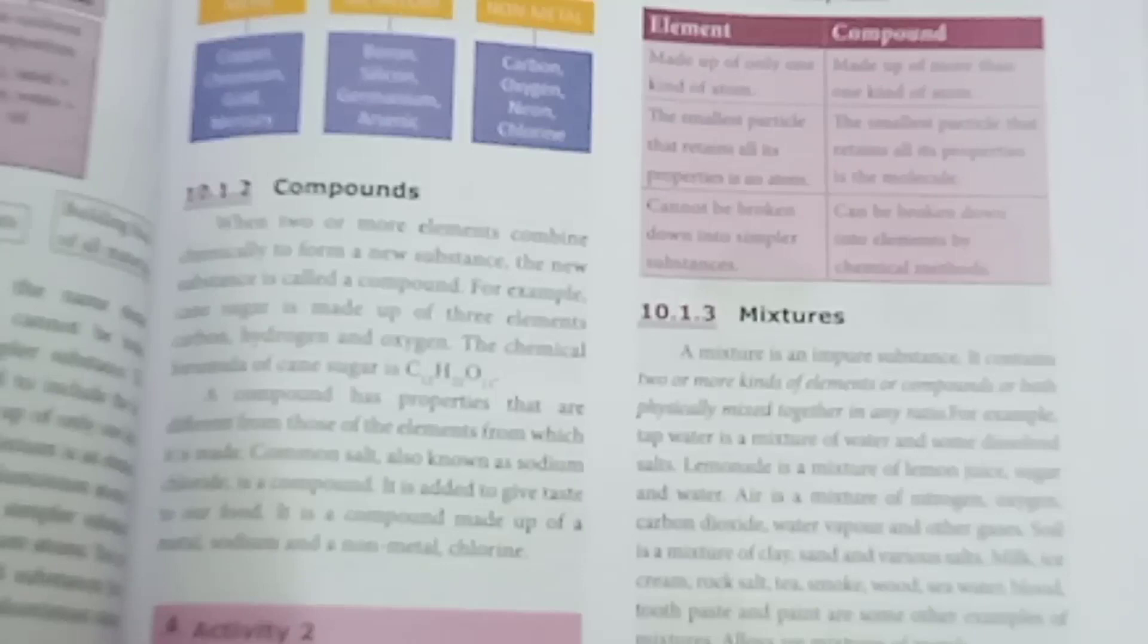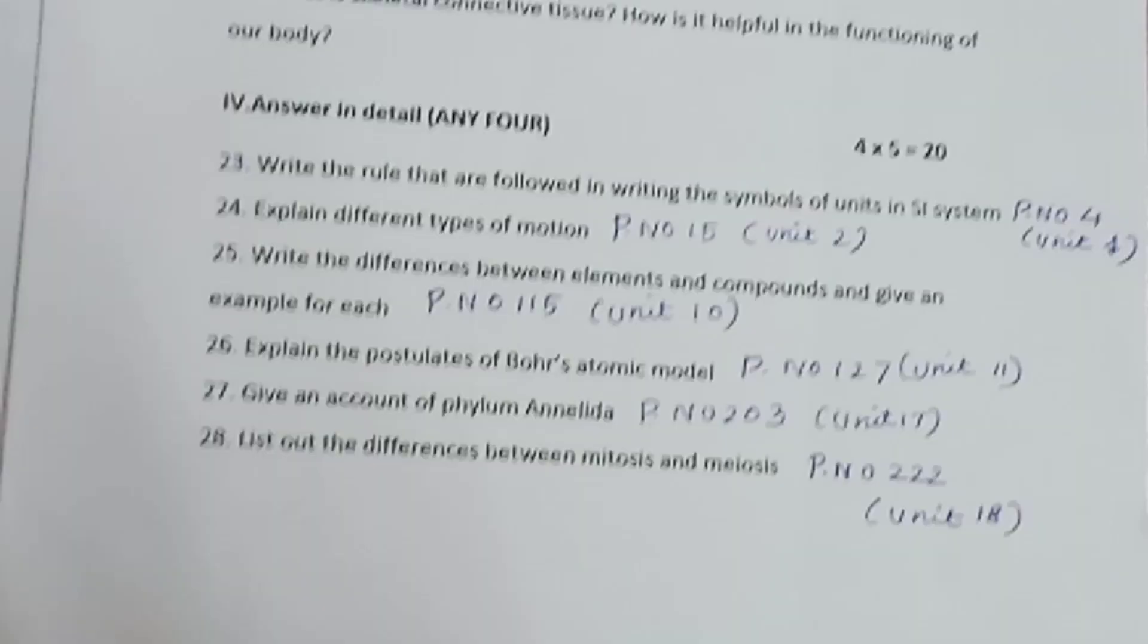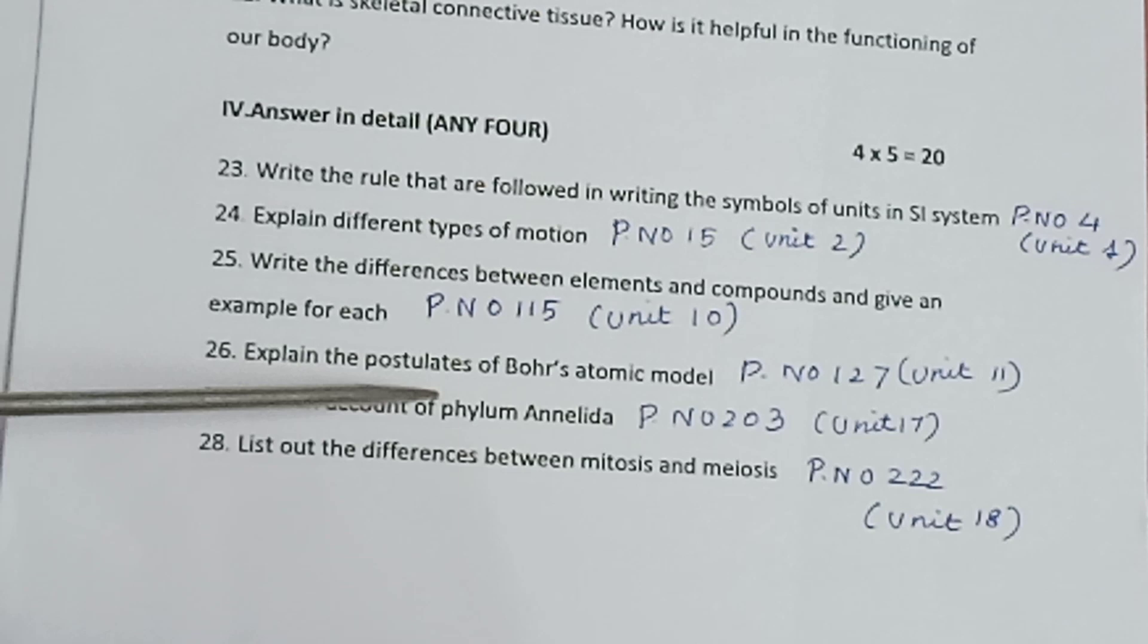Question 25: Write the differences between elements and compounds and give an example for each. Page number 115, Unit 10. Very important question. Tabulation answer.